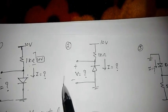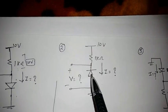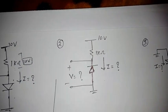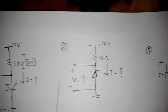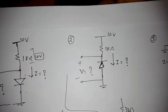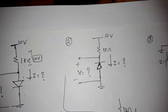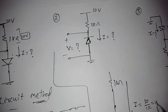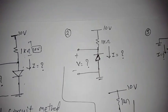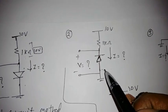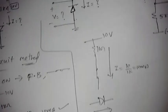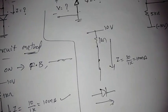Now, if we come to this circuit — it is the same circuit but the diode is reversed. With the same assumption, if I assume current I is flowing from 10 volts to ground, with the short circuit it will be 1 kilo ohm giving I equal to 10 milliampere. But I is flowing from top to bottom, meaning from negative to positive. Current should always flow from positive to negative, so whatever we assumed is wrong — the diode is reverse biased.